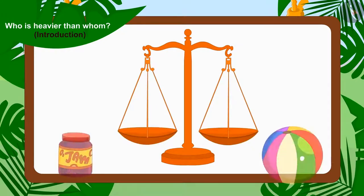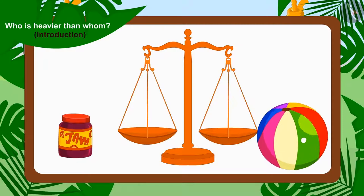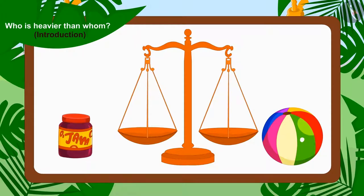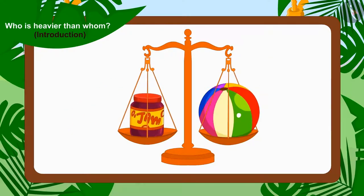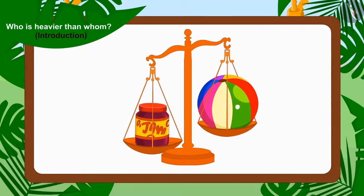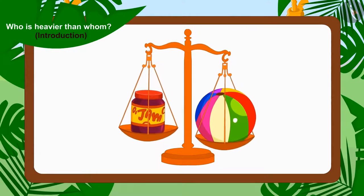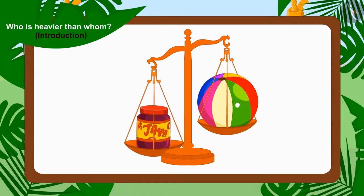We have to put the two things whose weight we want to compare on these plates of the weighing scale. The weighing scale will tip towards the side of the plate which has more weight on it.